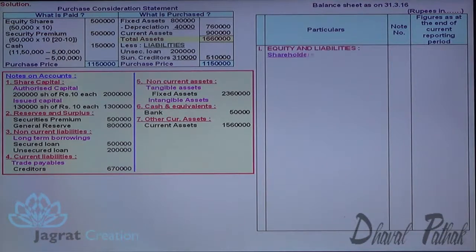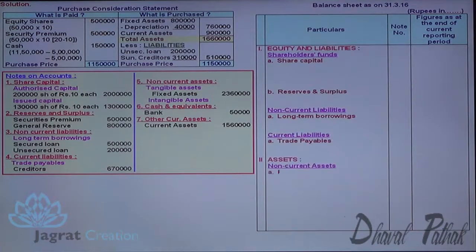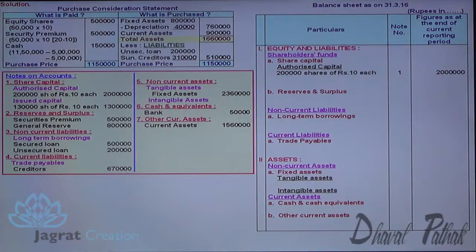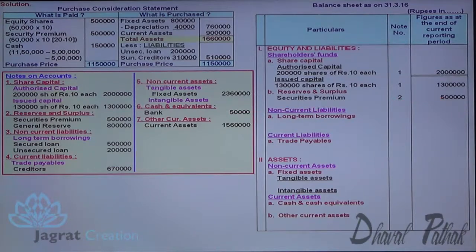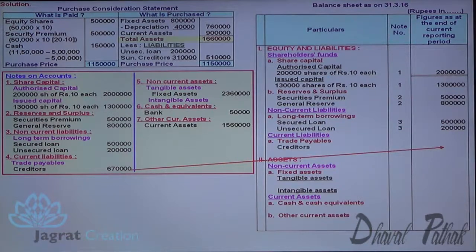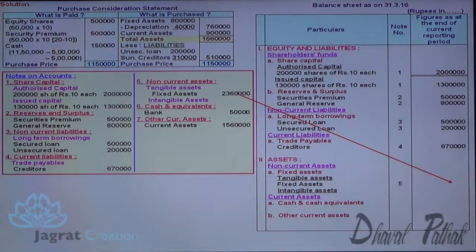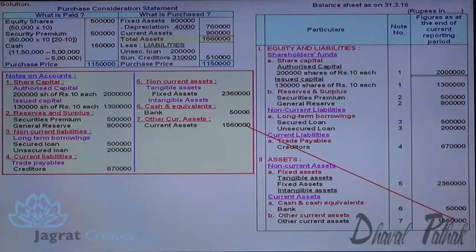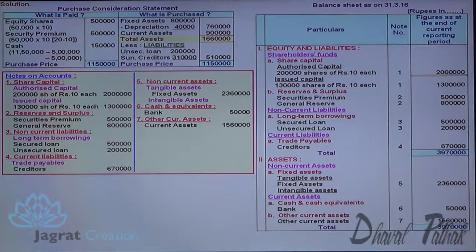Now I want to prepare the balance sheet as per Schedule 3. These are the headings under which reporting is to be made. Authorised share capital of ₹10 each; issued and subscribed capital considered in total; security premium under reserves and surplus; general reserve under reserves and surplus; long-term borrowings including secured and unsecured loans; trade payables — creditors; tangible fixed assets; intangible assets are not there; cash and cash equivalents ₹50,000; other current assets ₹50,000 and ₹60,000. The total of equity and liabilities must match the total of assets.